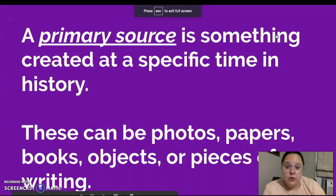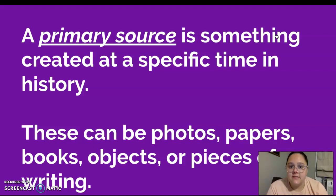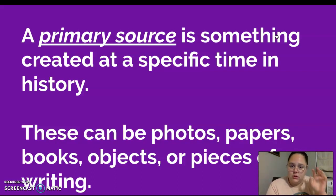So what is a primary source? A primary source is something created at a specific time in history — it has to have been done by someone who was there. These can be photographs taken, papers that were found or written during this time, books, objects, or pieces of writing from this time. It cannot be something done after the fact; it had to have been done by someone who was there and experienced it.